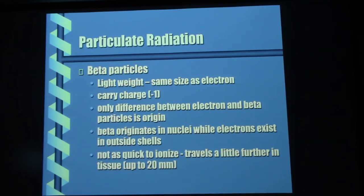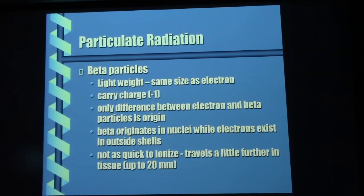Beta particles: these things are like electrons — they really are electrons, but electrons moving at high speed and independent of an atom. They do have a negative charge. The only difference is their origin — beta particles originate from inside the nucleus. Whenever a neutron splits, it generates a proton and a beta particle. Remember, a neutron is actually an electron and a proton together — so if you break one open, you get a proton and an electron, and we call that a beta particle. Beta particles moving at high speed can penetrate human tissue up to a depth of 20 millimeters — 2 centimeters.